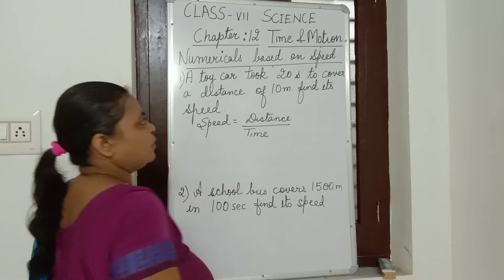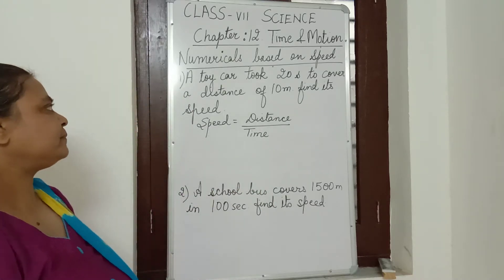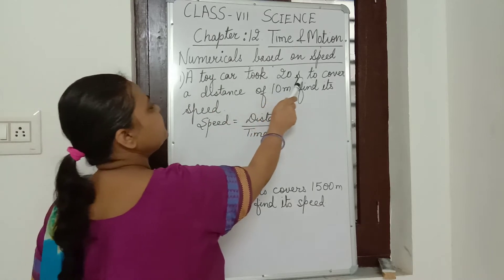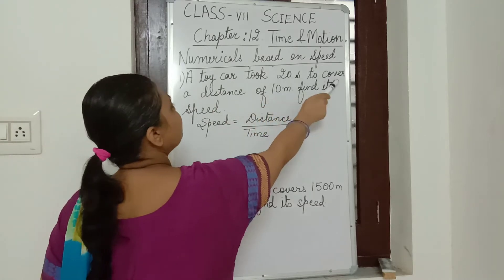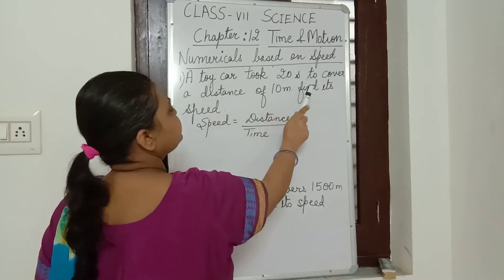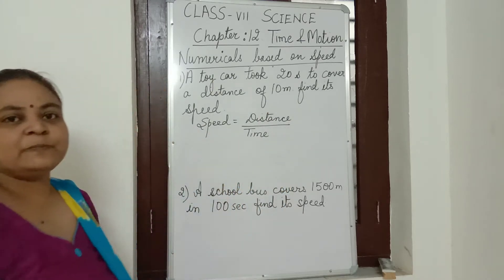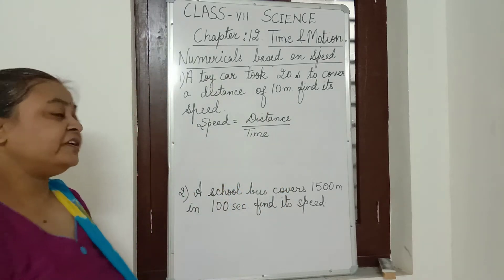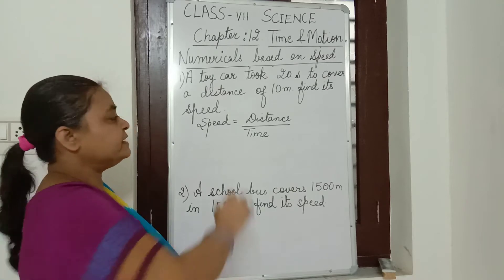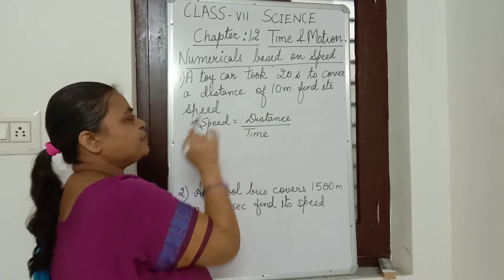Now let us read the first numerical. A toy car took 20 seconds to cover a distance of 10 meters. Find its speed. I have already written the formula — speed is equal to distance upon time.